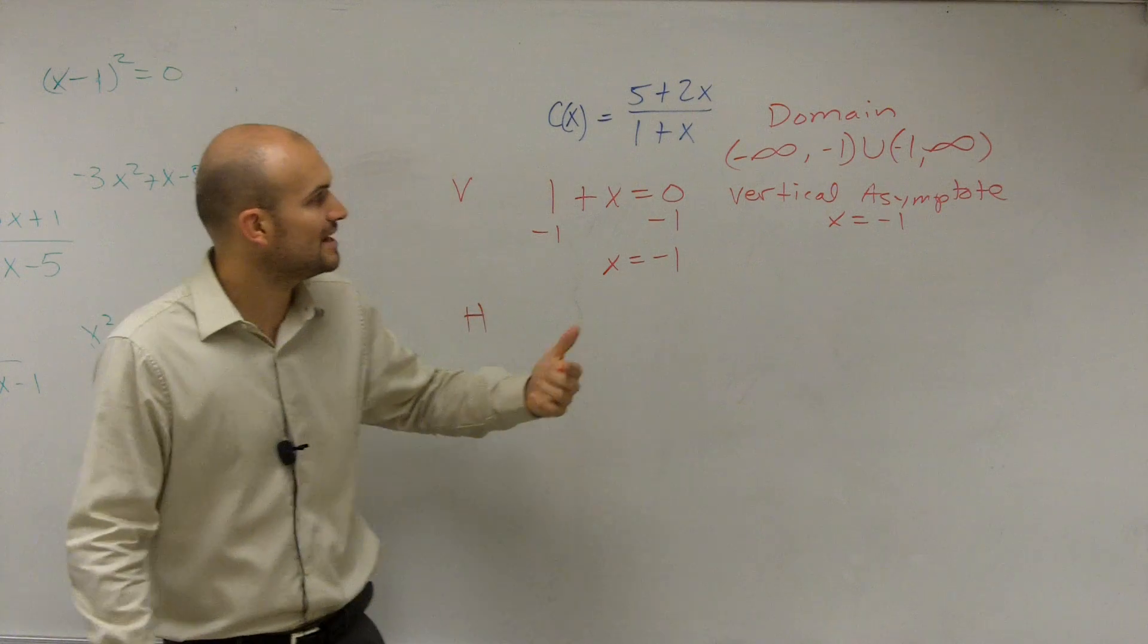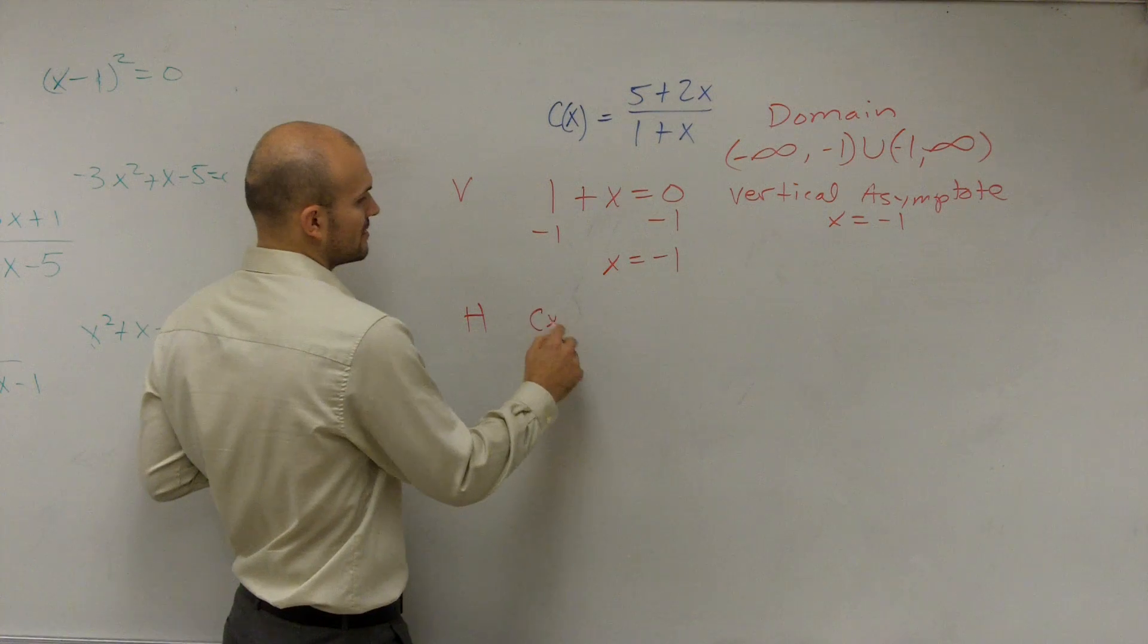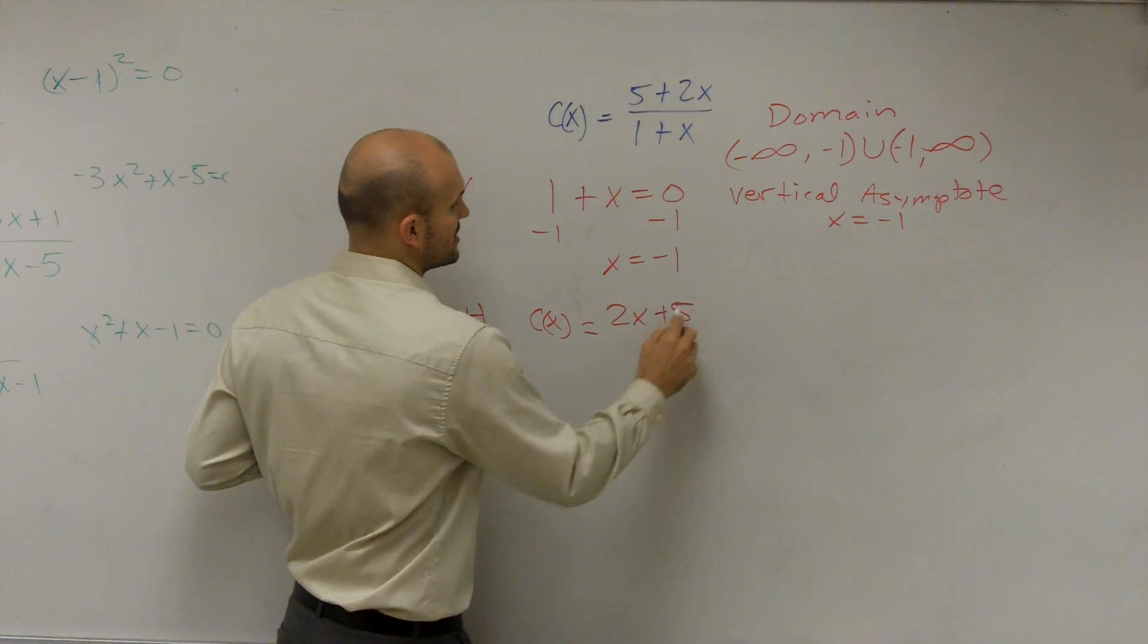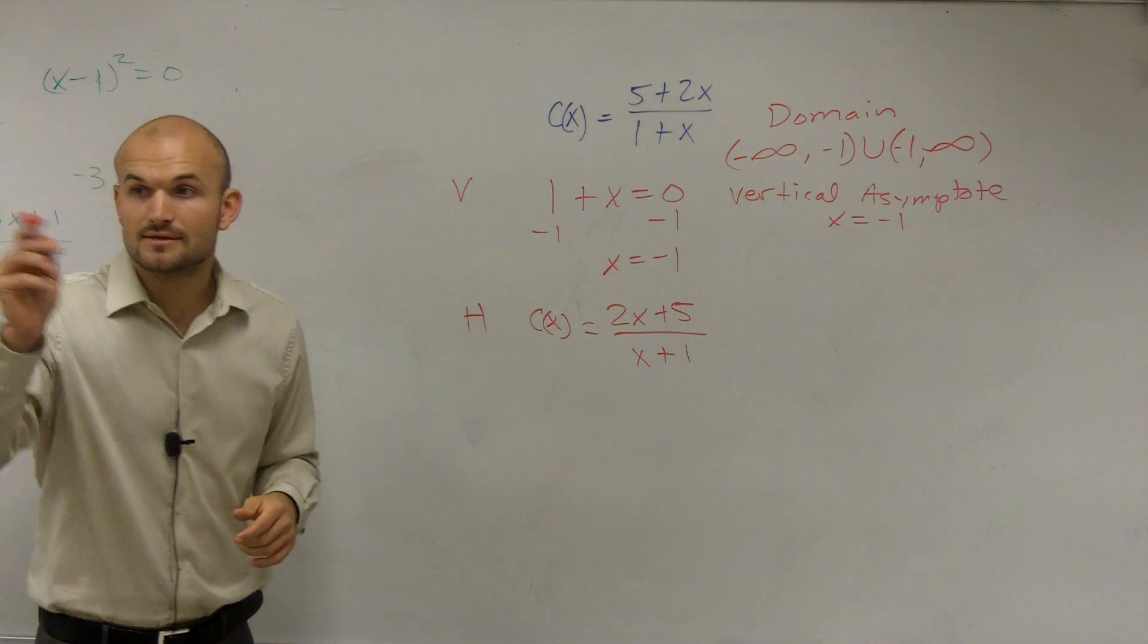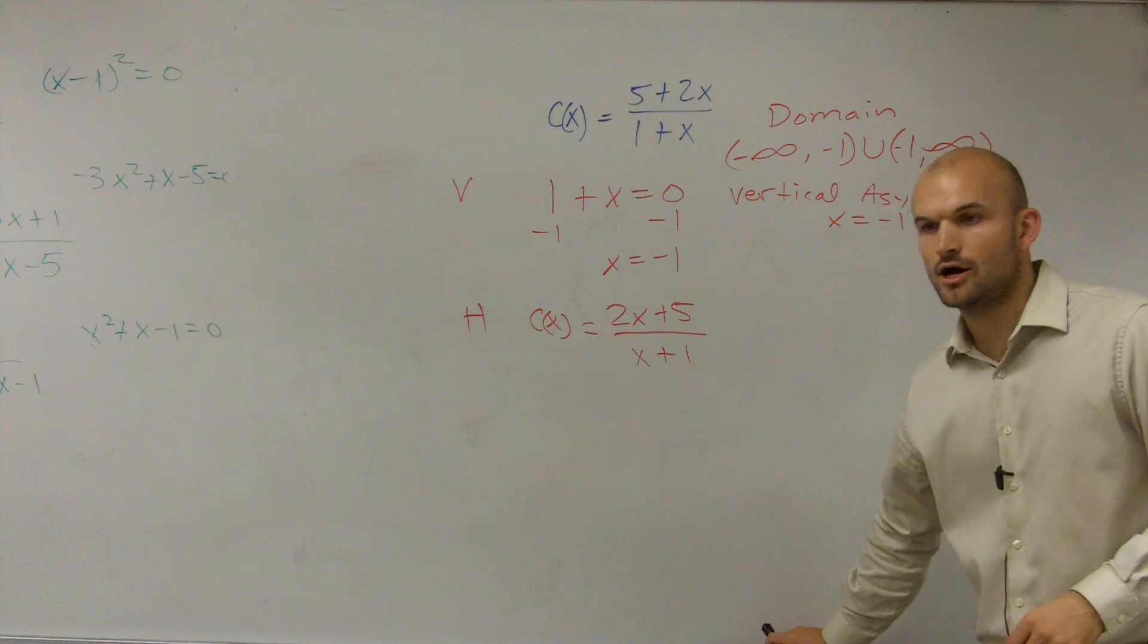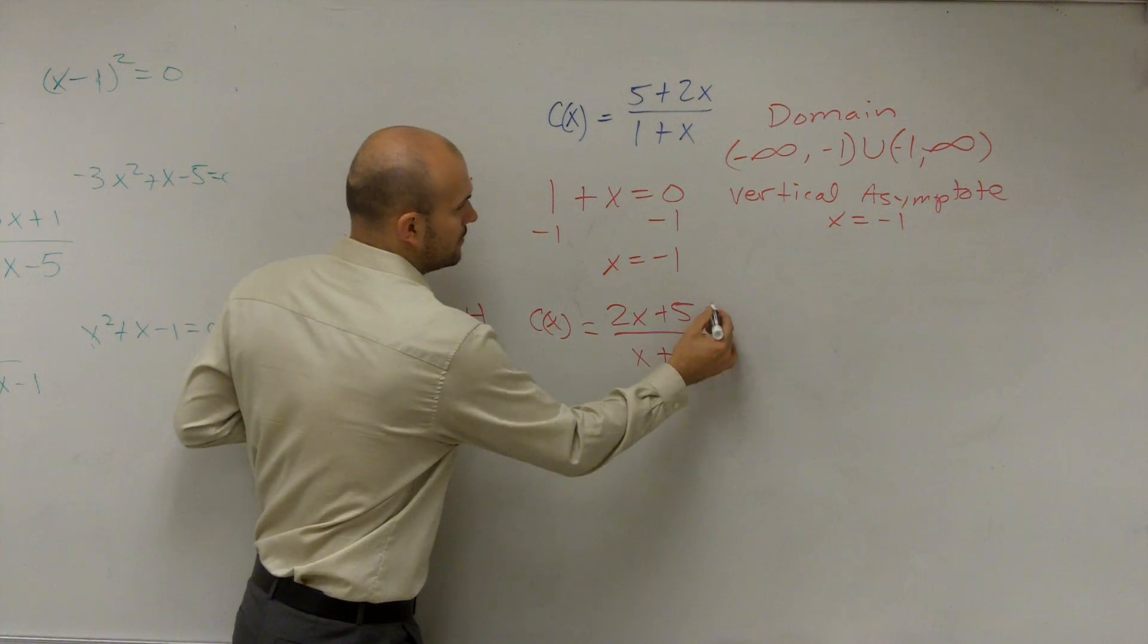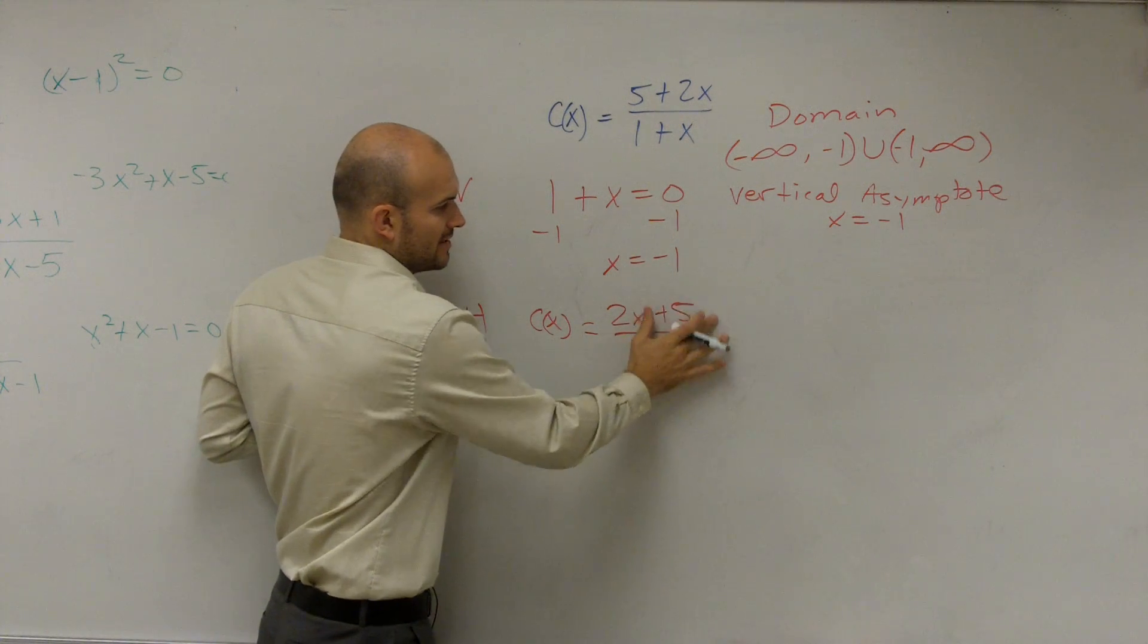Well, to first do that, I want to make sure that my polynomial is written in descending order. So let's rewrite this in descending order. Remember, you always have your highest degree first. So this should really be rewritten as 2x plus 5 over x plus 1. Always want to take your polynomial and write it in descending order. Because this is my degree. That'd be x to the 0. Because x to the 0, anything raised to the 0 is 1. 1 times 5 would just be 5, but we don't write it in there.